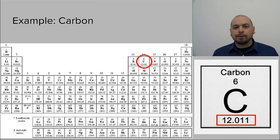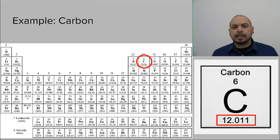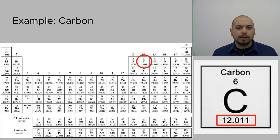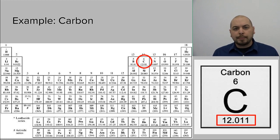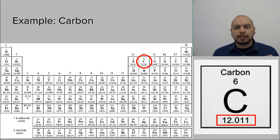It's important to note that not every periodic table is going to show the atomic mass to the same number of decimal places. For example, you might see carbon on your periodic table with 12.01, or on some you might even see it as 12.0. So be aware that different periodic tables are going to show it differently. For chemistry purposes this year, I want to make sure that you use whatever value is listed on the official periodic table that you're given.